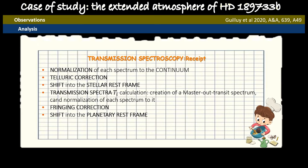First of all, we have normalized each spectrum to the continuum. We have corrected for the telluric lines because we are observing from the ground our atmosphere. Then we have shifted all the spectra in the rest frame of the star. And we have calculated our transmission spectra by dividing each spectrum for a master out-of-transit spectrum. And then after the correction for the fringing, we have shifted all the transmission spectra in the rest frame of the planet.